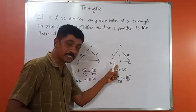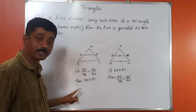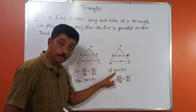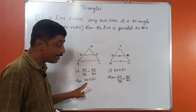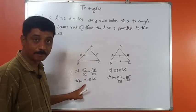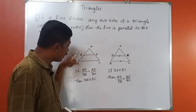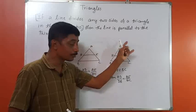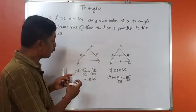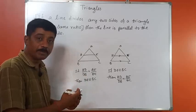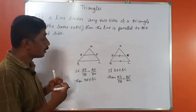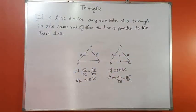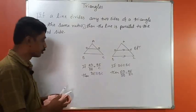Compare the two: in BPT, DE parallel to BC is given and we proved the ratio. In the Converse of BPT, the ratio is given and we need to prove DE is parallel to BC. So the given and the to-prove are exactly swapped — that is the difference between BPT and its converse.